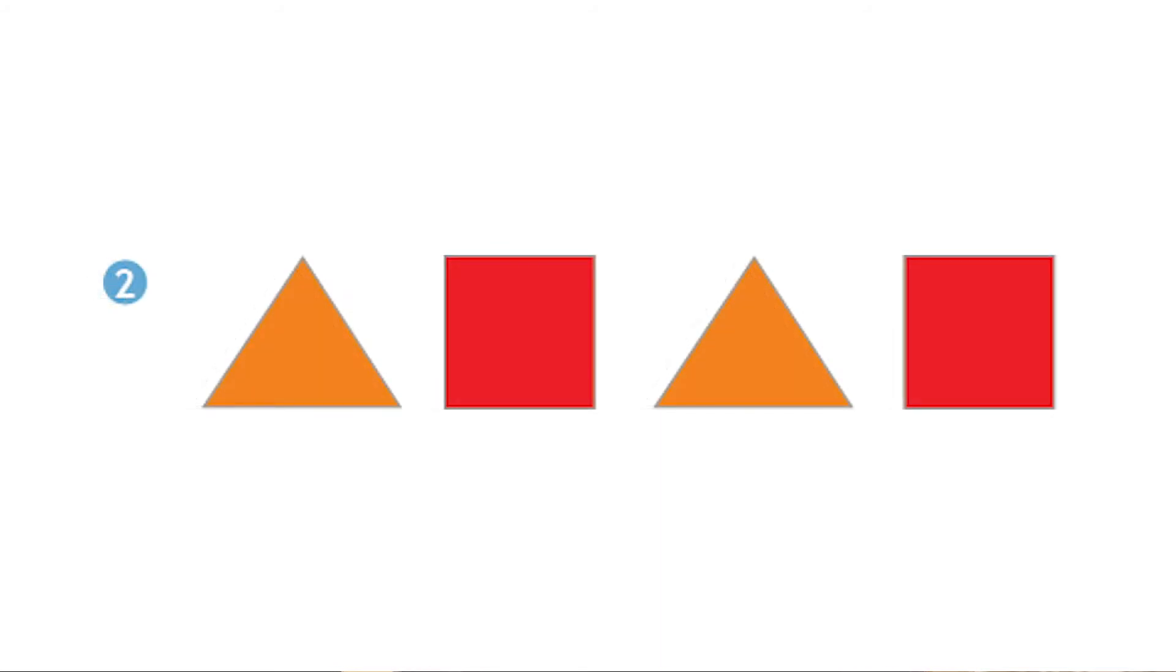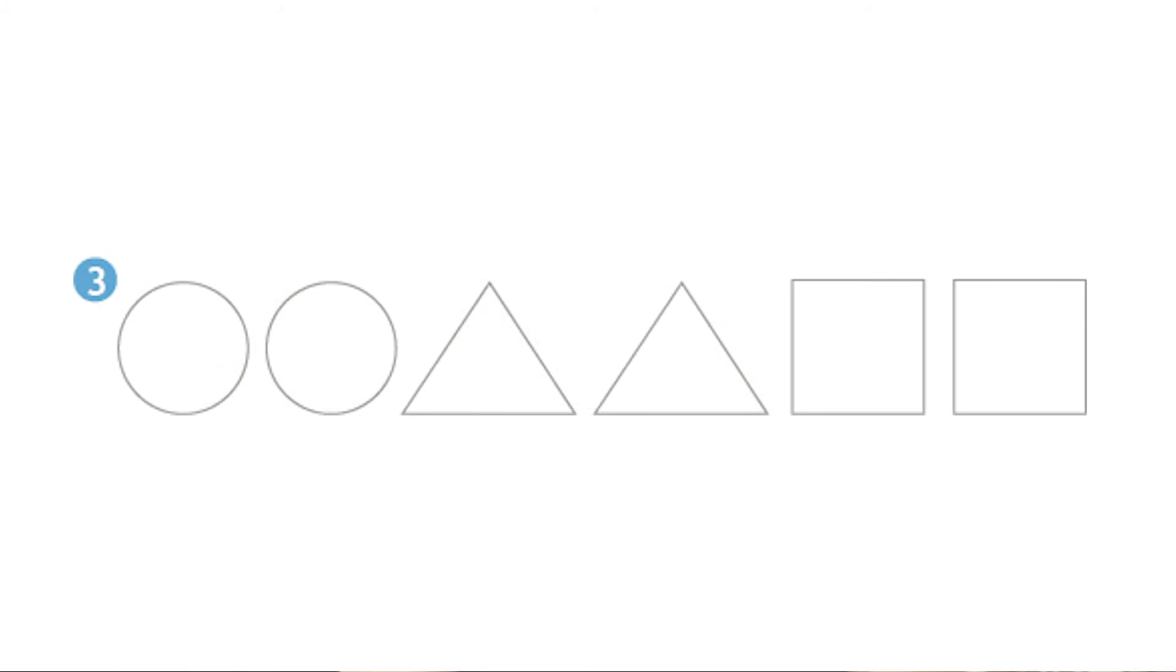You can pause the video and color those triangles and squares orange and red. Excellent job. Now we go to exercise number three. Here we have the introduction of the circle, which we've learned already. The circle is which note? It's E, great. And the color of the circle is yellow, excellent.